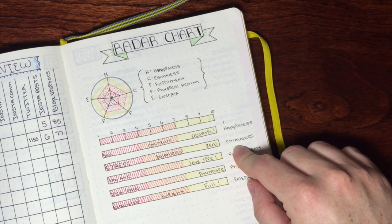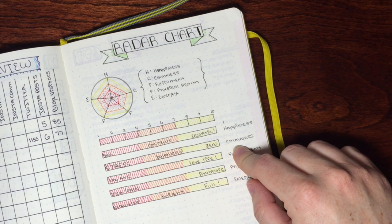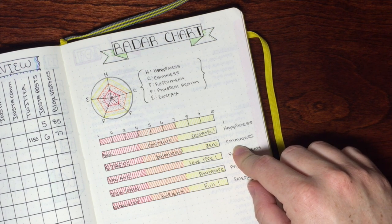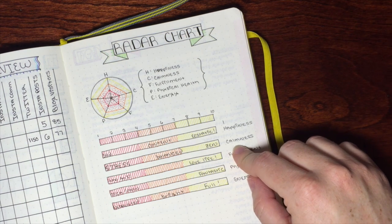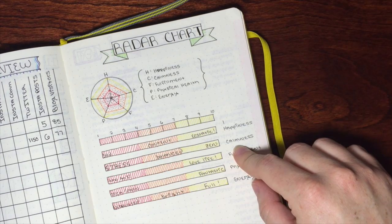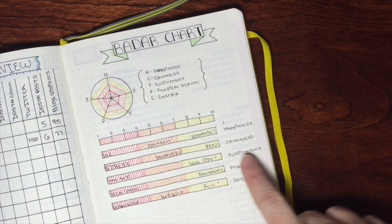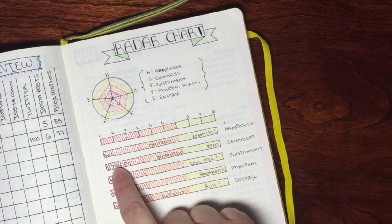But rather than focusing on the negative, I wanted to focus on the positive and say rather than how stressed am I today, how calm am I today? How centered, how happy is my soul basically? How centered am I today? So I measure calmness instead of stress.